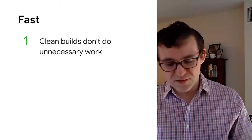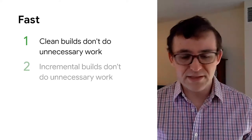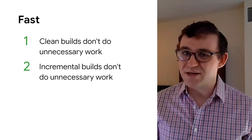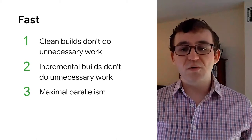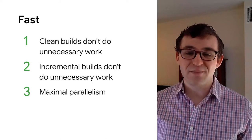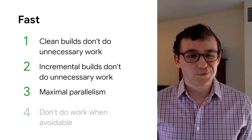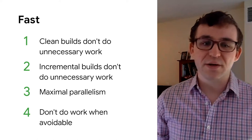So what does it mean for a build to be fast? When you do a clean build — download the source code for the first time and run build for the first time — you don't want to do any unnecessary work. Similarly, when you change a single source file and run build again, you still don't want to do any unnecessary work. You want to be able to use all the cores available on your machine, or even better, on someone else's machine that you're able to run compute on. And last but not least, you just don't want to do work when it's avoidable — don't run things that don't need to be run to finish the build.